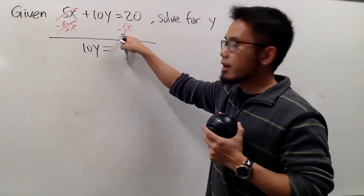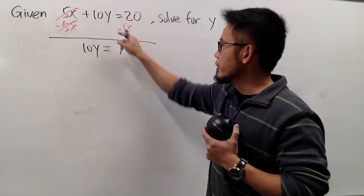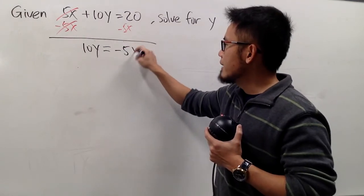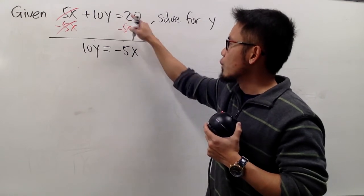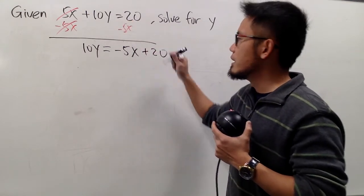So right here, let's write down the x term first. So let's bring down minus 5x, and then this was a positive 20, so we put down plus 20 like that.